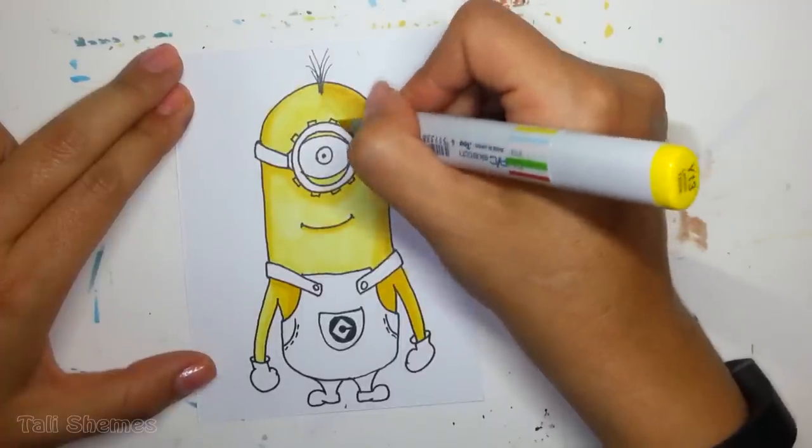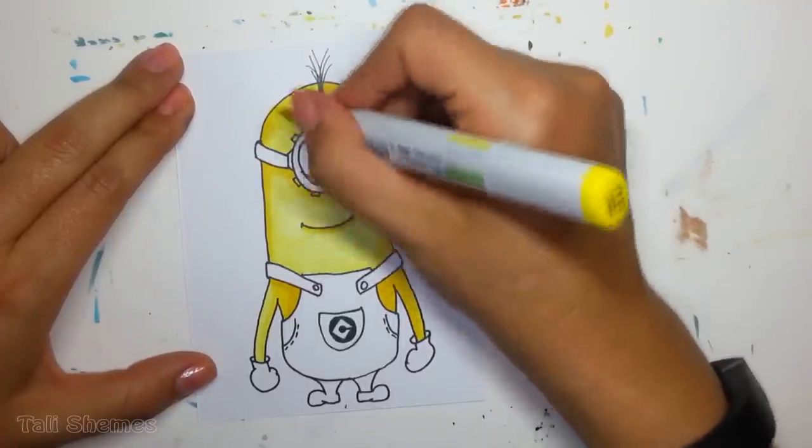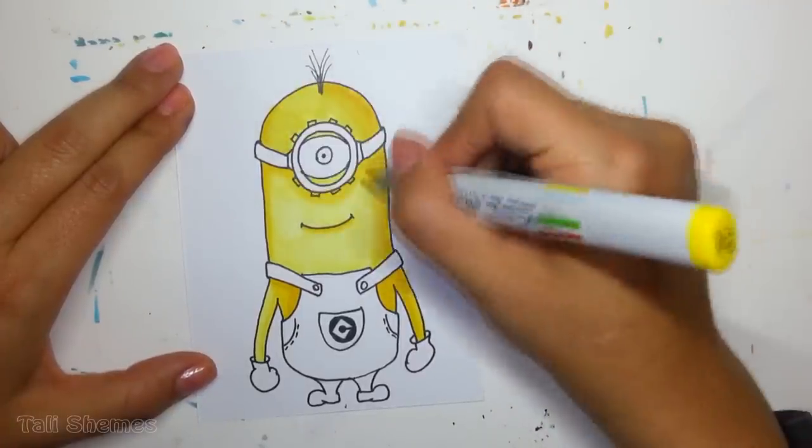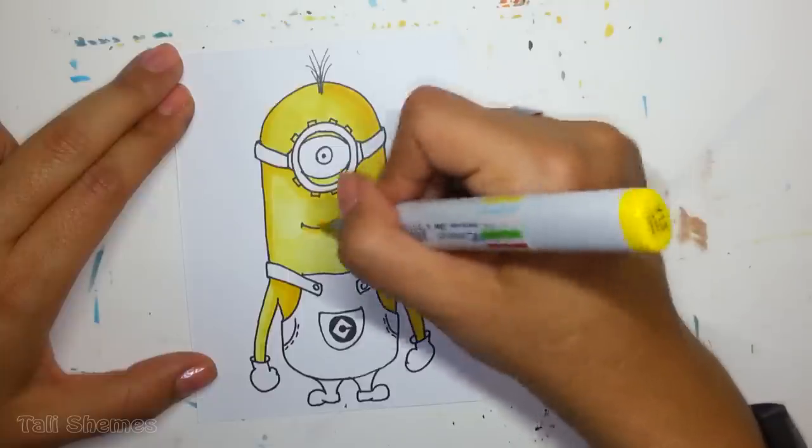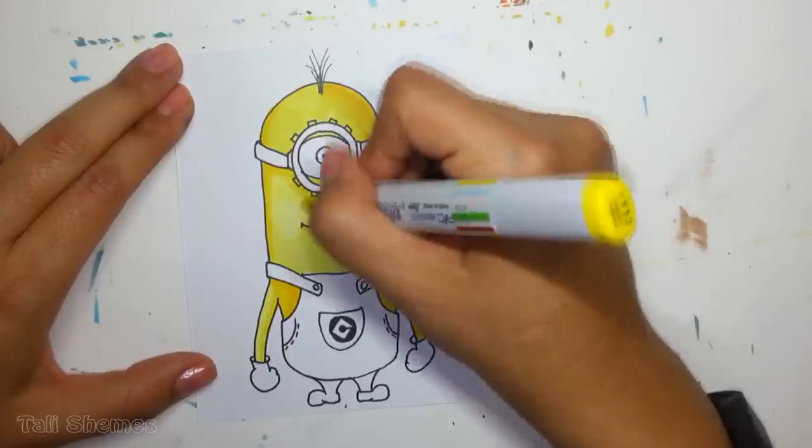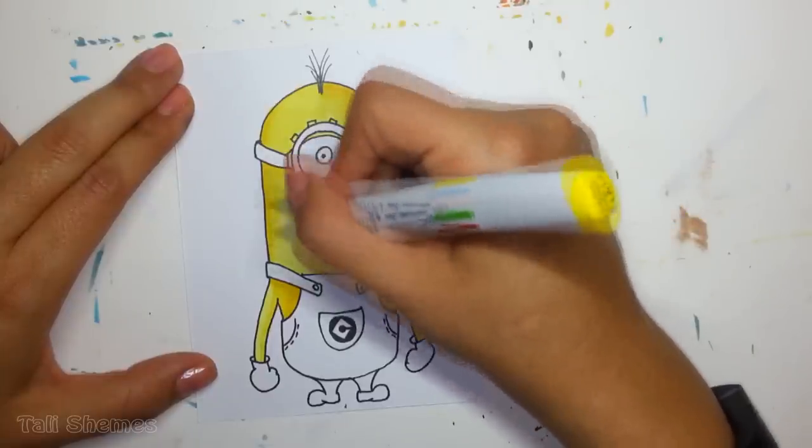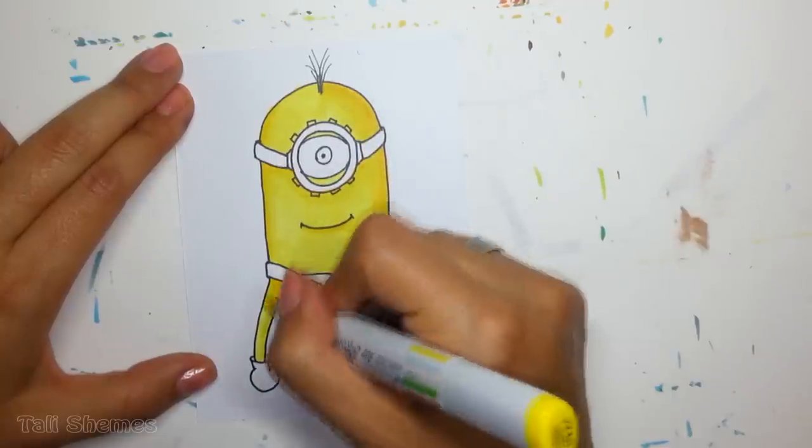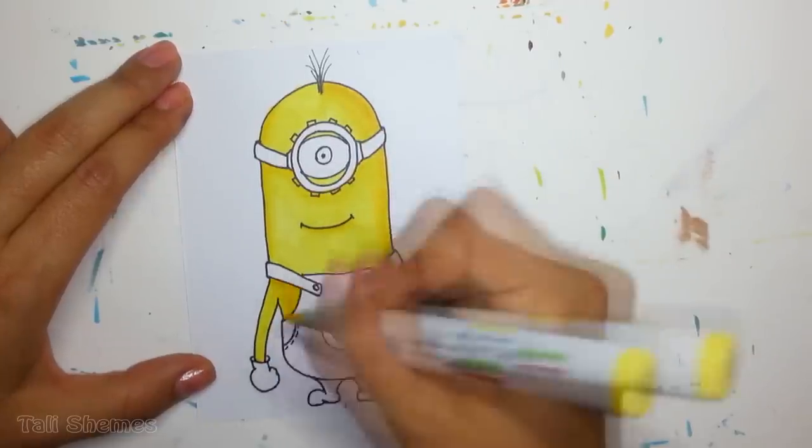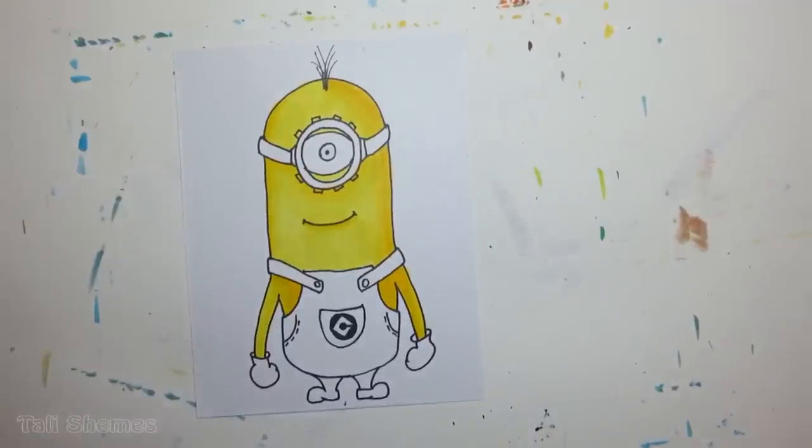Now I'm coming back with the lightest tone to blend all the colors, just going over all the layers to make it a nice gradient. This is what I like about Copic markers - you can go over the colors again and again and nothing will happen to the paper. You won't get pieces of paper on your marker, everything will stay smooth and nice.